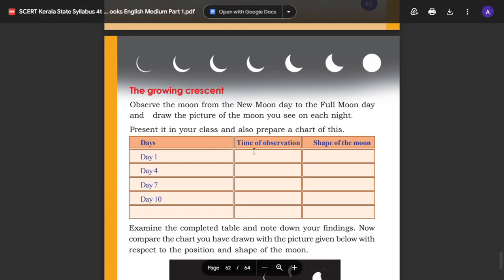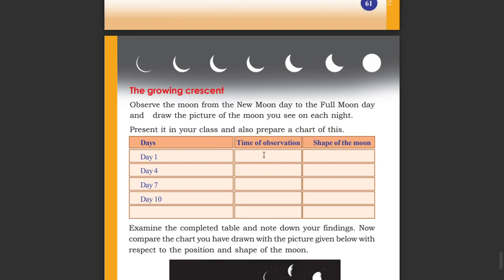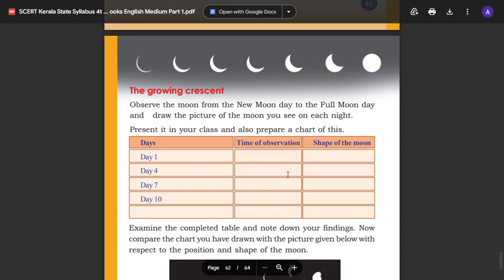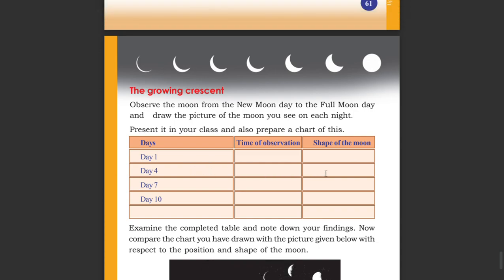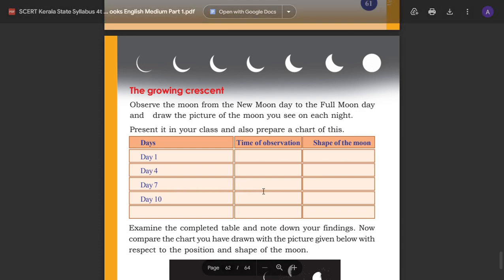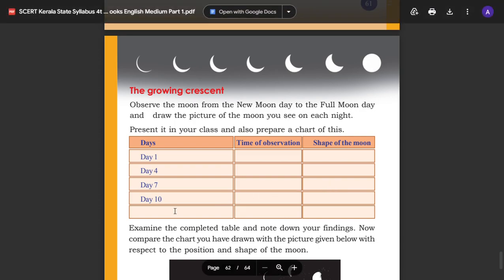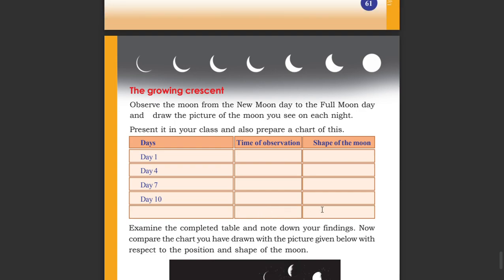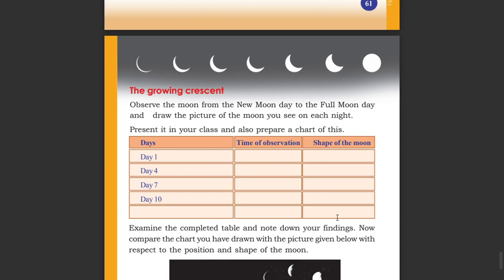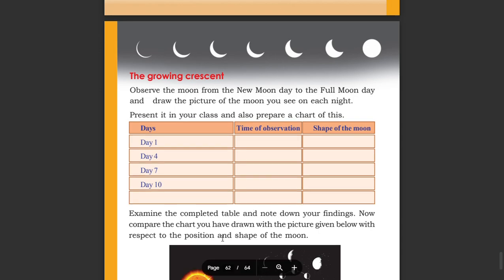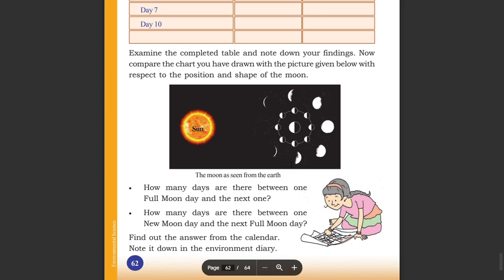Day 1 — time of observation. Day 2. Day 3. Day 7. Now compare the chart you have drawn with the picture given below with respect to the position and shape of the moon.